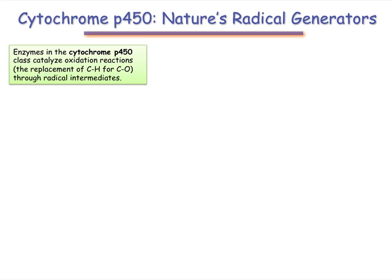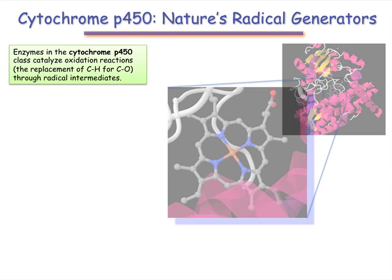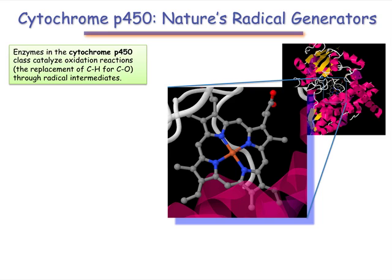We can understand the mechanism of cytochrome enzymes using the concepts we've already discussed in this lesson. The active sites of P450 enzymes contain a heme group — iron surrounded by a large porphyrin molecule.